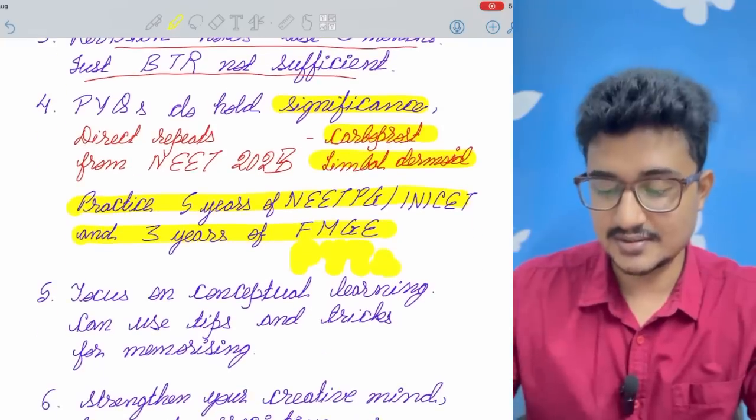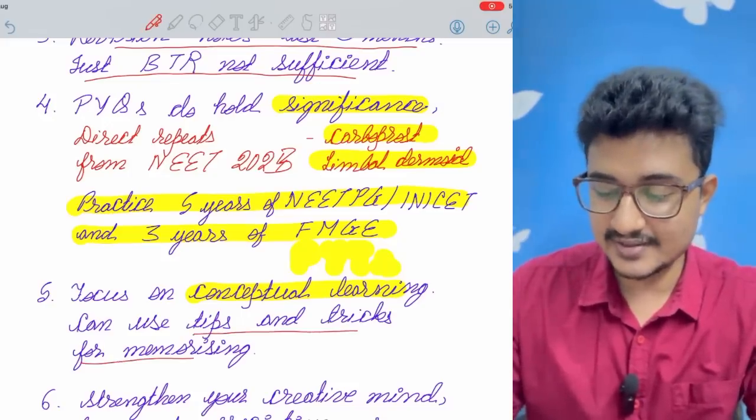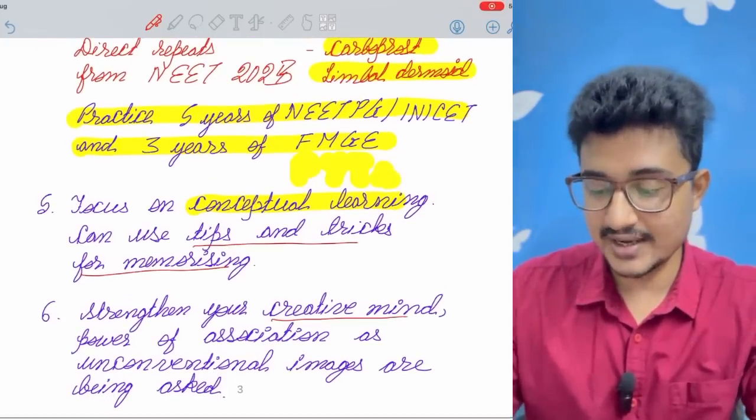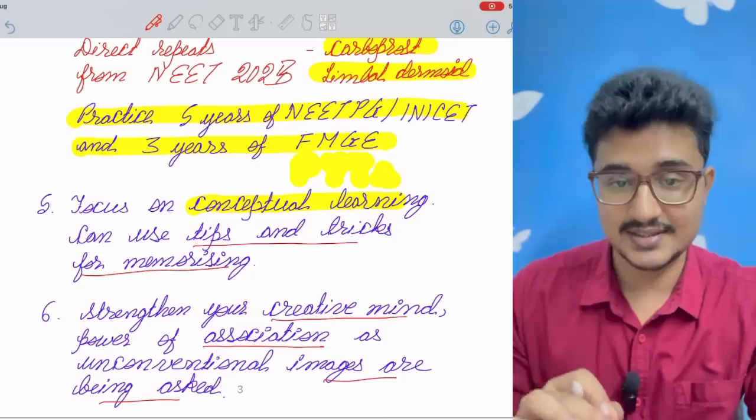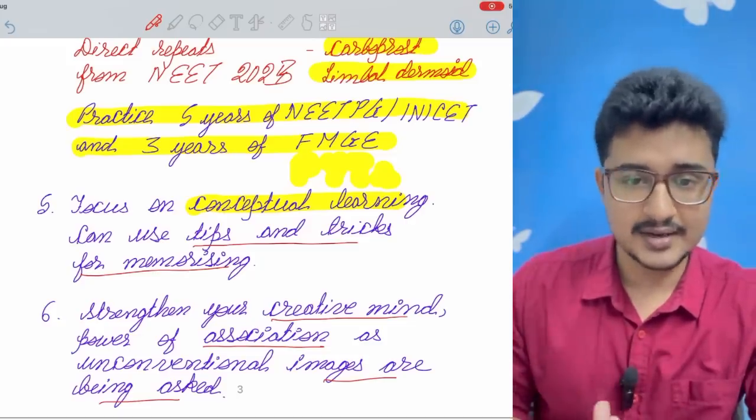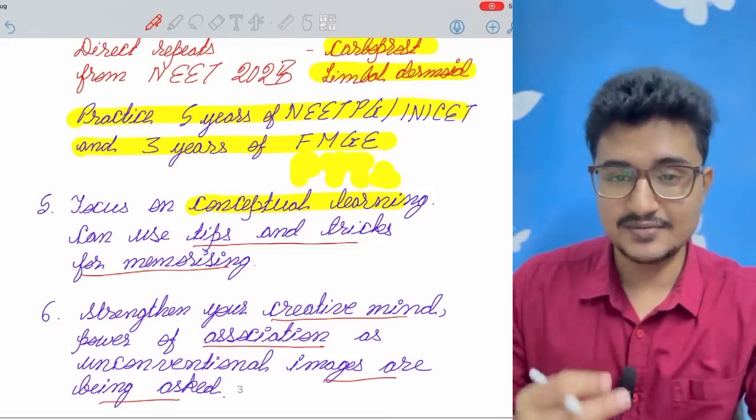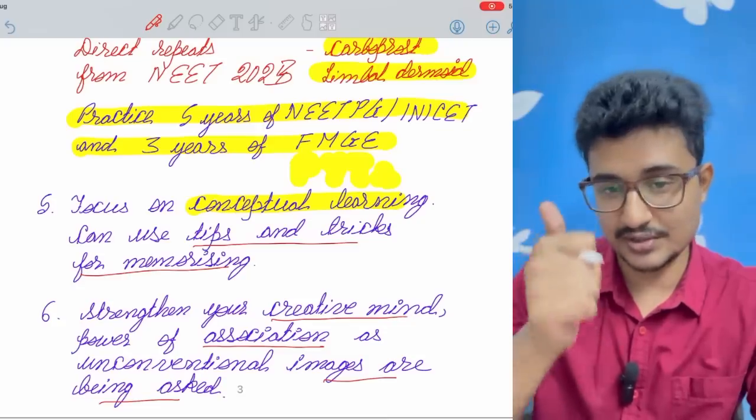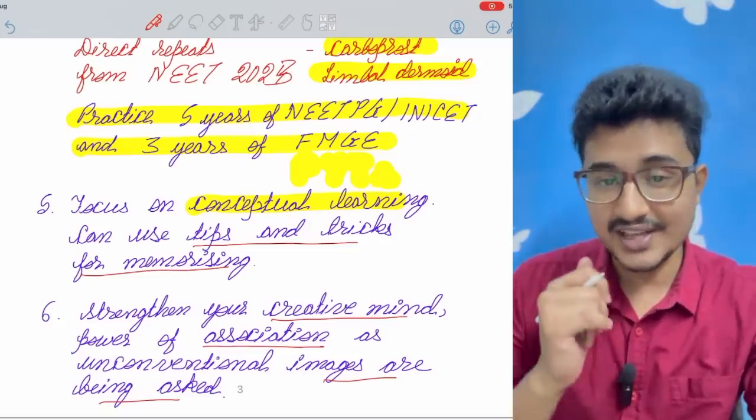Focus on conceptual learning, don't focus on rote learning but you can use the tips and tricks to memorize things better. Strengthen your creative mind and the power of association as unconventional images are being asked nowadays. Unconventional images are given like that of LD dissection or is it saccular aneurysm MRI, some prosthetic prosthesis is given in the sacral, pulmonary images of mastectomy, many unconventional images which our coaching institute doesn't teach much. You have to focus on the association with your learning, the hints you are getting from that question. You have to apply your creative mind and your association power for the unconventional images that are being asked.